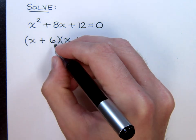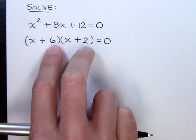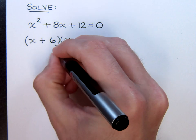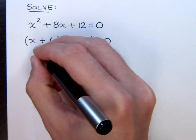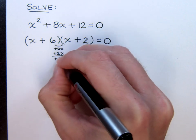Now you can easily check this to make sure you've got everything right. x times x is x squared. 6 times 2 is 12. And in the middle you have a plus 6x. And on the outside you have a plus 2x, and that gives you that positive 8x in the middle.